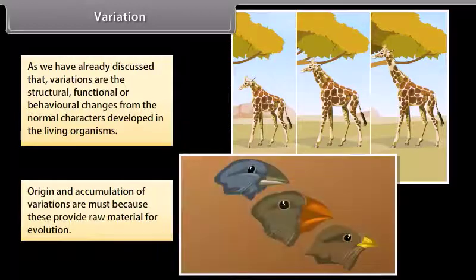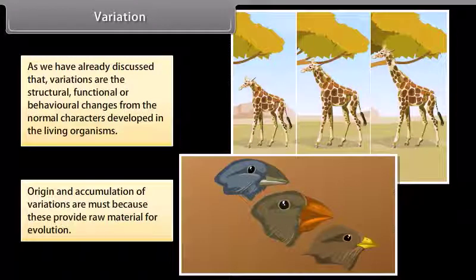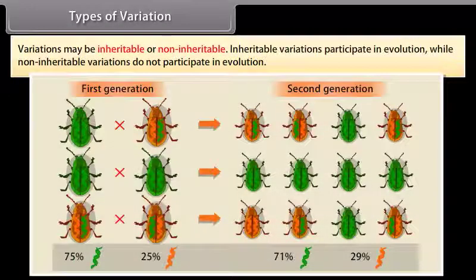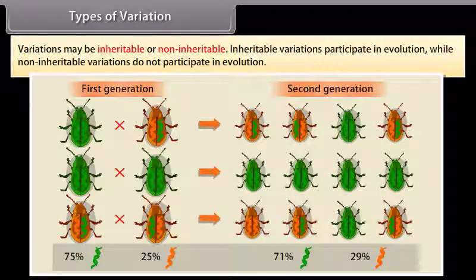Origin and accumulation of variations are a must because these provide raw material for evolution. Variations may be inheritable or non-inheritable. Inheritable variations participate in evolution, while non-inheritable variations do not participate in evolution.